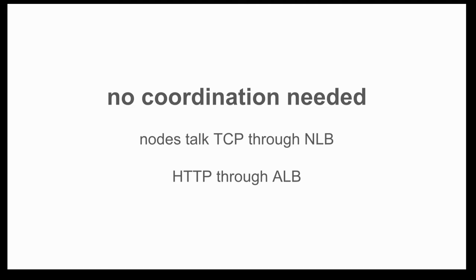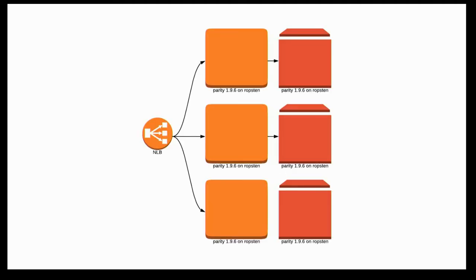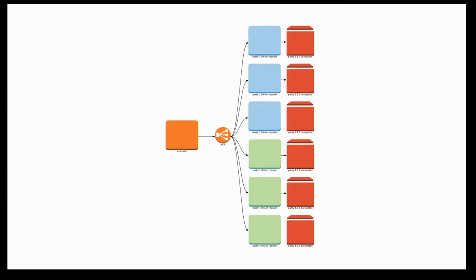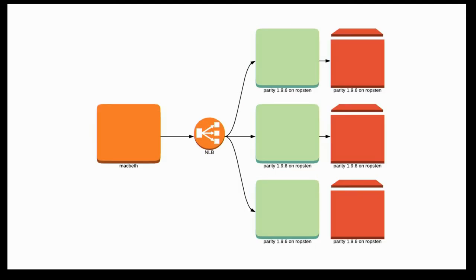The deploy process here is really, really simple and nice because NLBs give us static IPs, making it a seamless process to deploy these. Here we have an NLB sitting in front of three different Parity nodes, with a client application talking through the NLB to those nodes. We spin up a whole new set, grab three more, then tear down the previous blue nodes, and the client application never actually sees it — it just behaves totally normally.